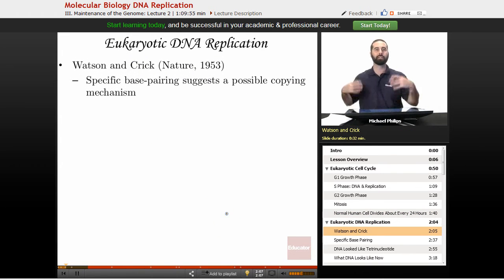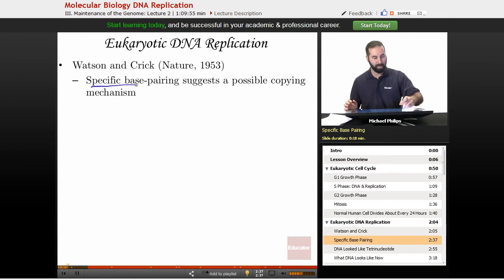We can't talk about DNA replication without talking about Watson and Crick. Remember, back from the second unit, we talked about Watson and Crick as the gentlemen who discovered the structure of DNA. They published a one-page paper in the journal Nature in 1953, saying that DNA has specific base pairing that suggests a possible copying mechanism.